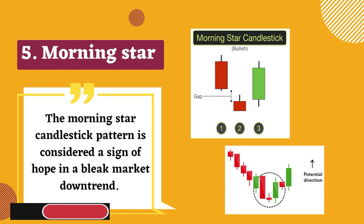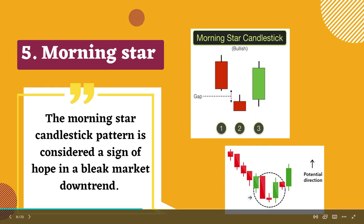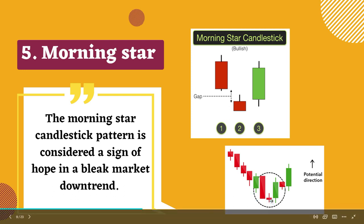The fifth candlestick pattern is the morning star. The morning star candlestick pattern is considered a sign of hope in a bleak market downtrend. It is a three-stick pattern — one short-bodied candle between a long red and a long green.